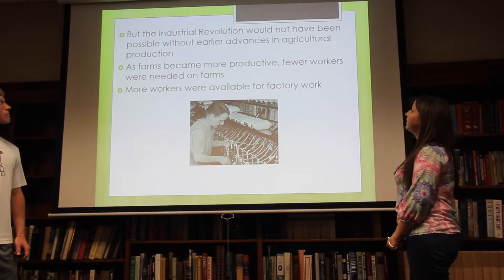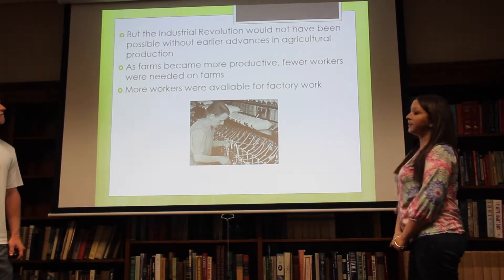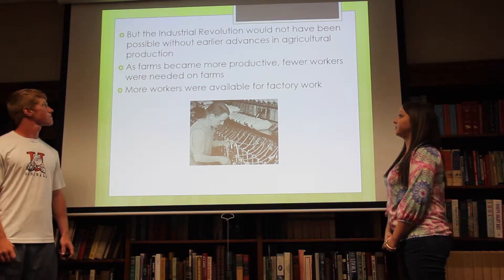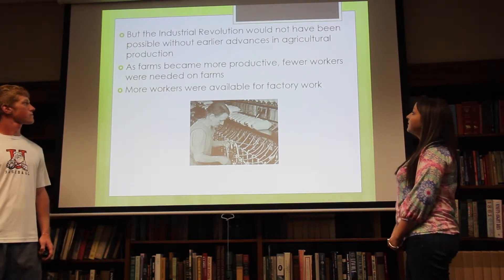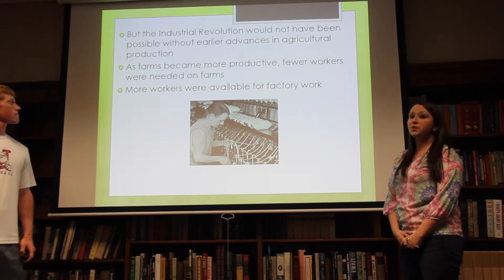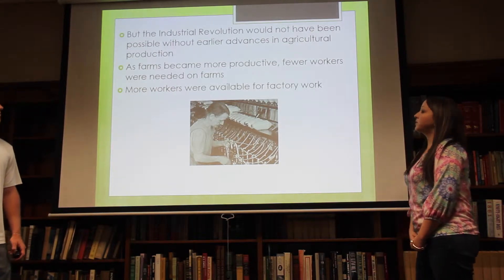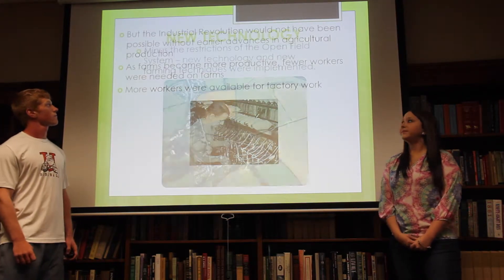The Industrial Revolution would not have been possible without earlier advances in agriculture. Farms became more productive and fewer workers were needed to work on the farms. More workers were therefore available for factory work as well.